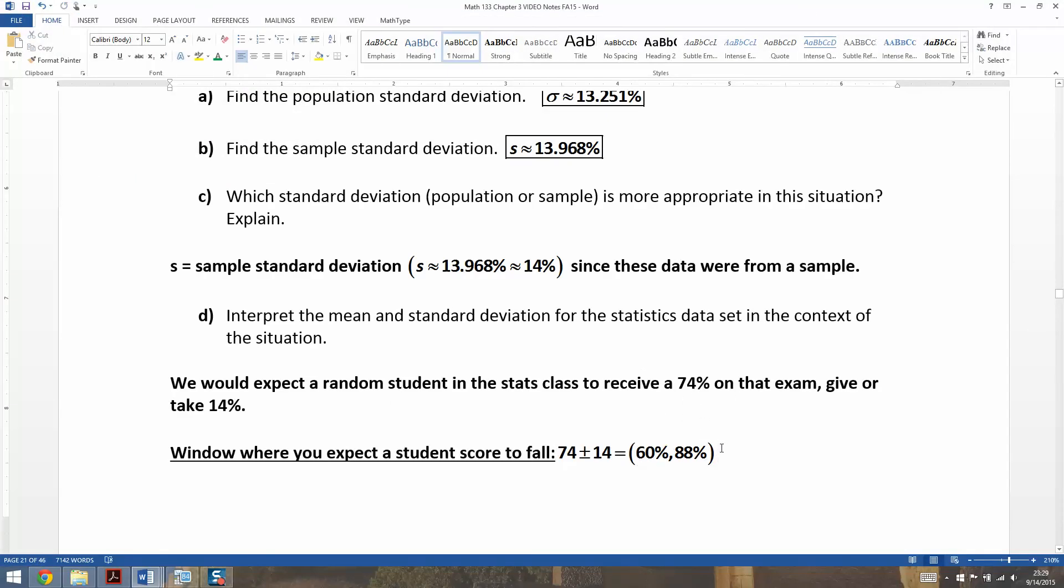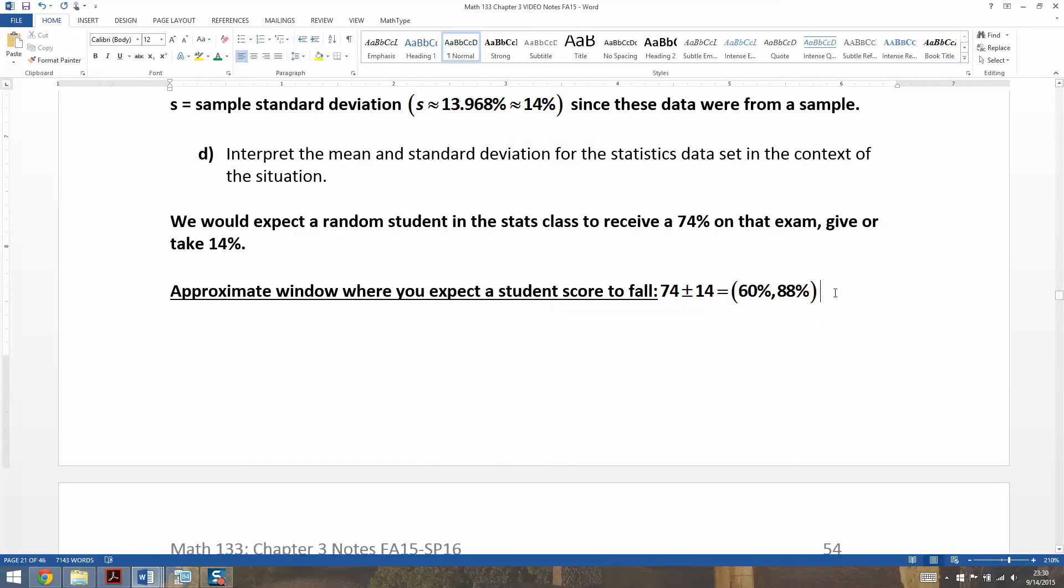That's what you're doing when you create that give or take. Now, it doesn't mean that no students are beyond that, right? For example, we know there are students above 88. It's giving you a rough window where you expect students to fall. I should say that. An approximate window where you expect students scores to fall.